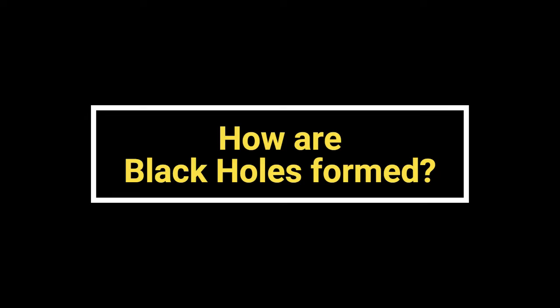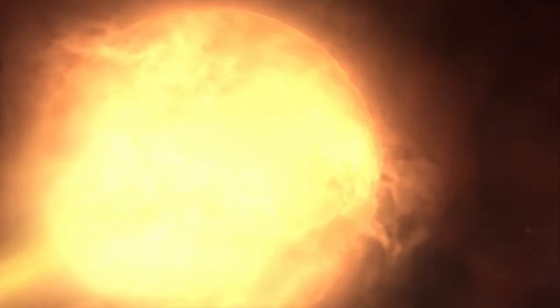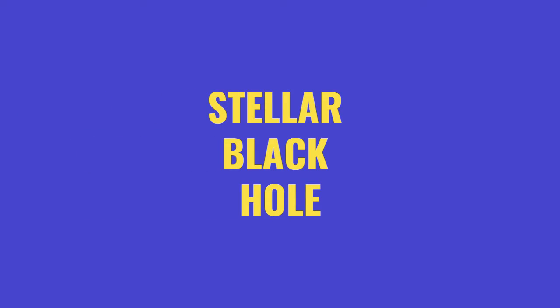Now the question arises, how are black holes formed? The answer is quite simple. The black holes were formed in the early universe soon after the Big Bang, where the center of a massive star collapses in upon itself. More specifically, a stellar black hole.